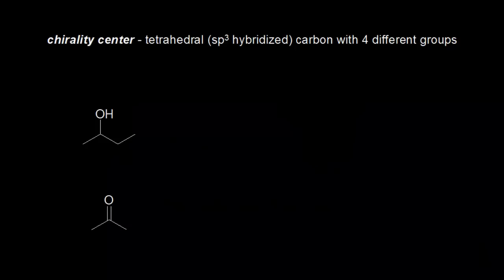Once you understand the concept of chirality, the next skill is to be able to identify a chirality center. I'm using the term chirality center here, but you also might hear chiral center, stereocenter, stereogenic center, or asymmetric center — they're all pretty much referring to the same concept: a tetrahedral carbon, an sp3 hybridized carbon that has four different groups attached to it.